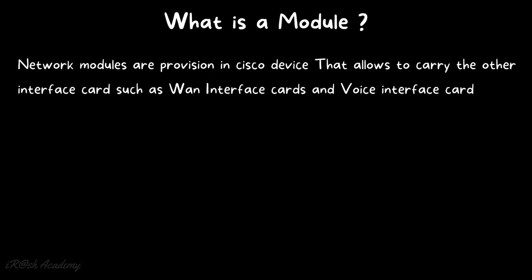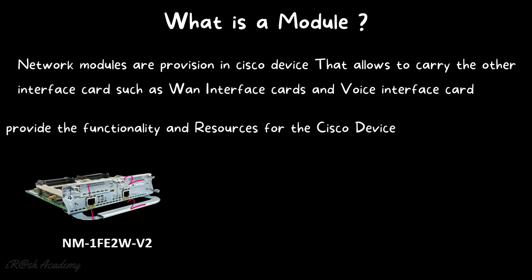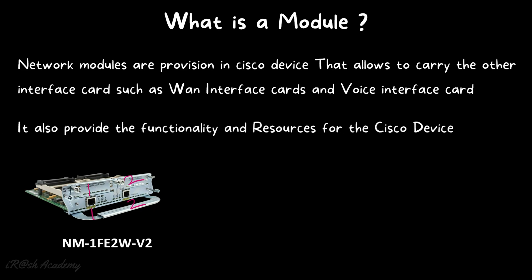A network module is a provision in Cisco devices that allows carrying other interface cards, such as WAN interface cards and voice interface cards. For example, one network module provides two WAN interface card slots, and in addition includes two Fast Ethernet ports. This network module can house two WAN interface cards while also providing additional Fast Ethernet interfaces and resources for the Cisco device.